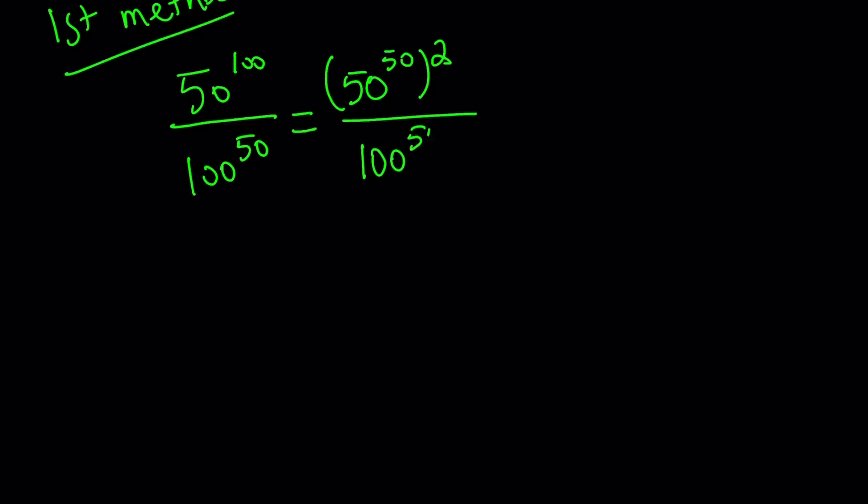First method. Our original problem was 50 to the power 100 divided by 100 to the power 50. So for my first method, I'm going to do the following. First of all, notice that 100 is an even number. So I can write this as 50 to the power 50 squared. Now the motivation behind writing it as 50 times 2, not 25 times 4 or 10 times 10, is the presence of the exponent at the bottom. That is a 50, so I'd like to take advantage of that.